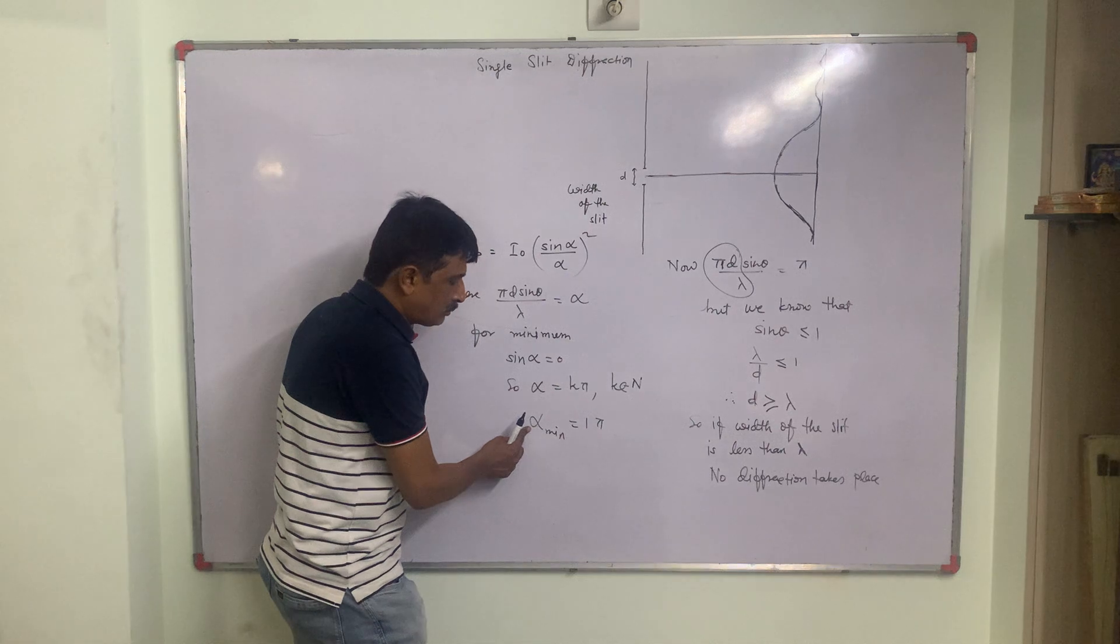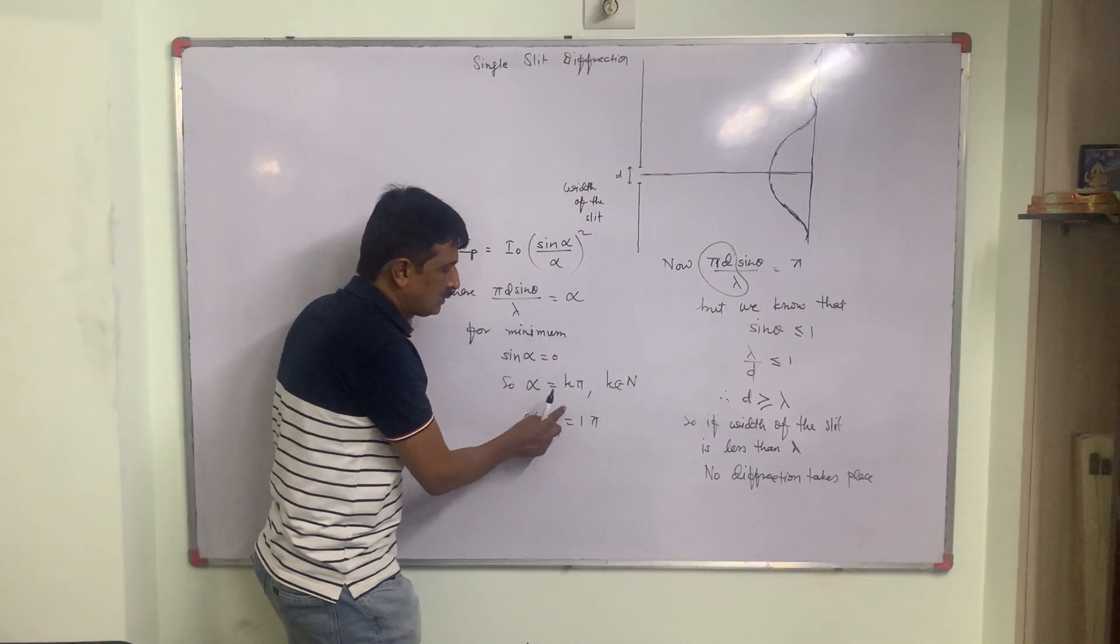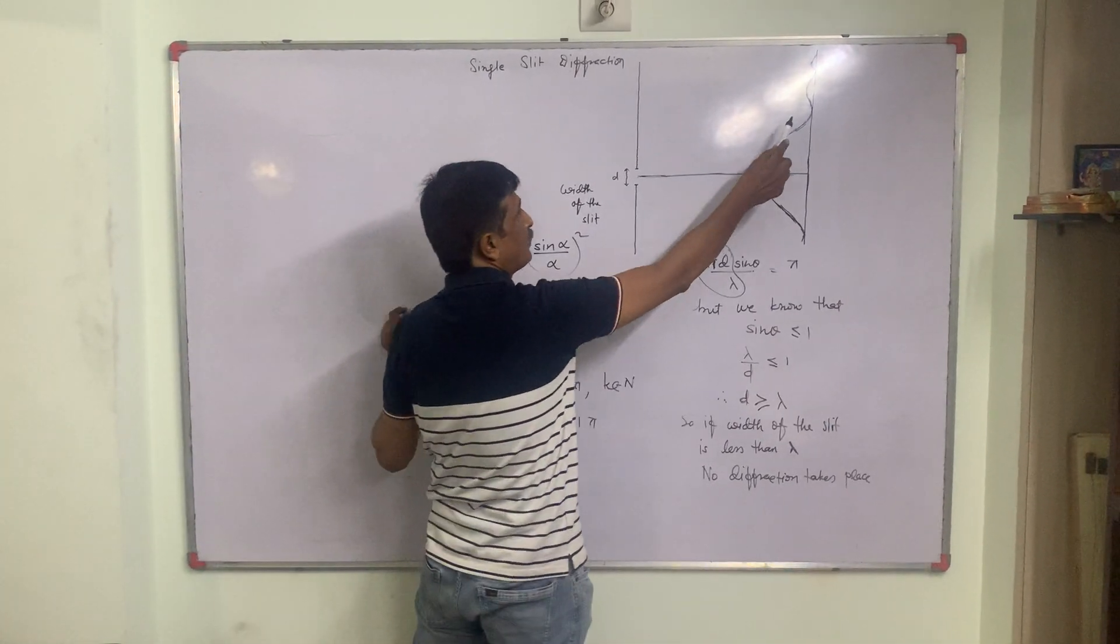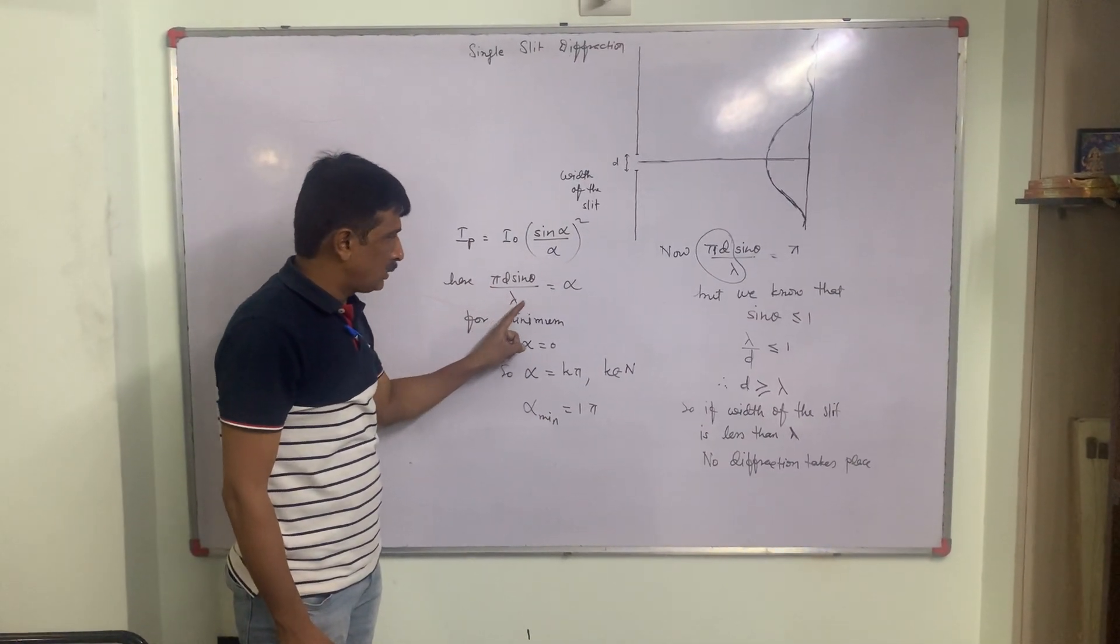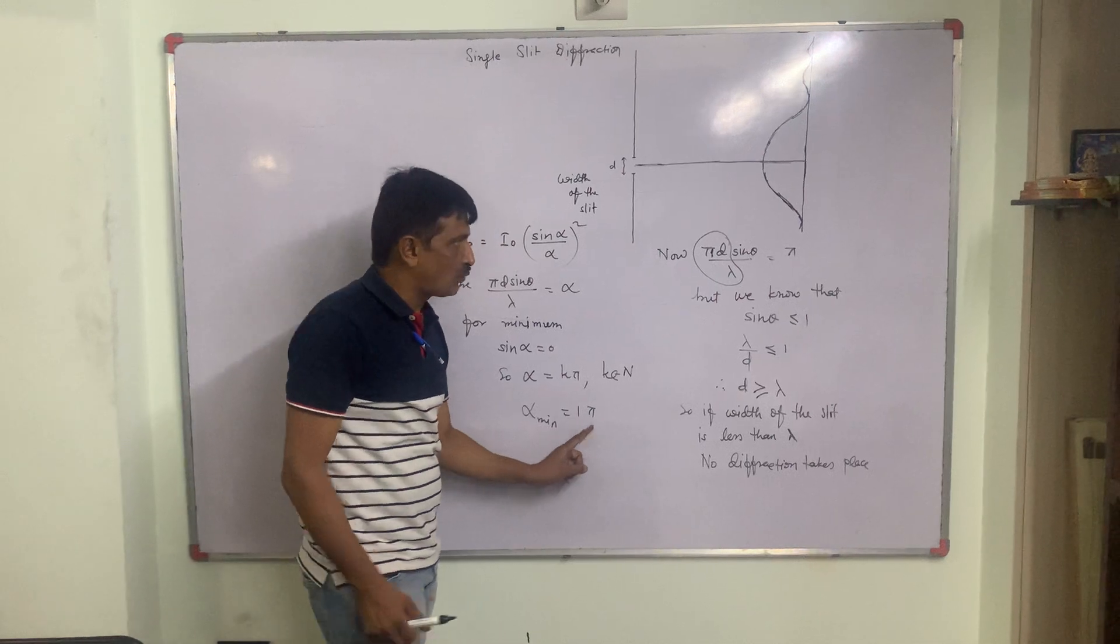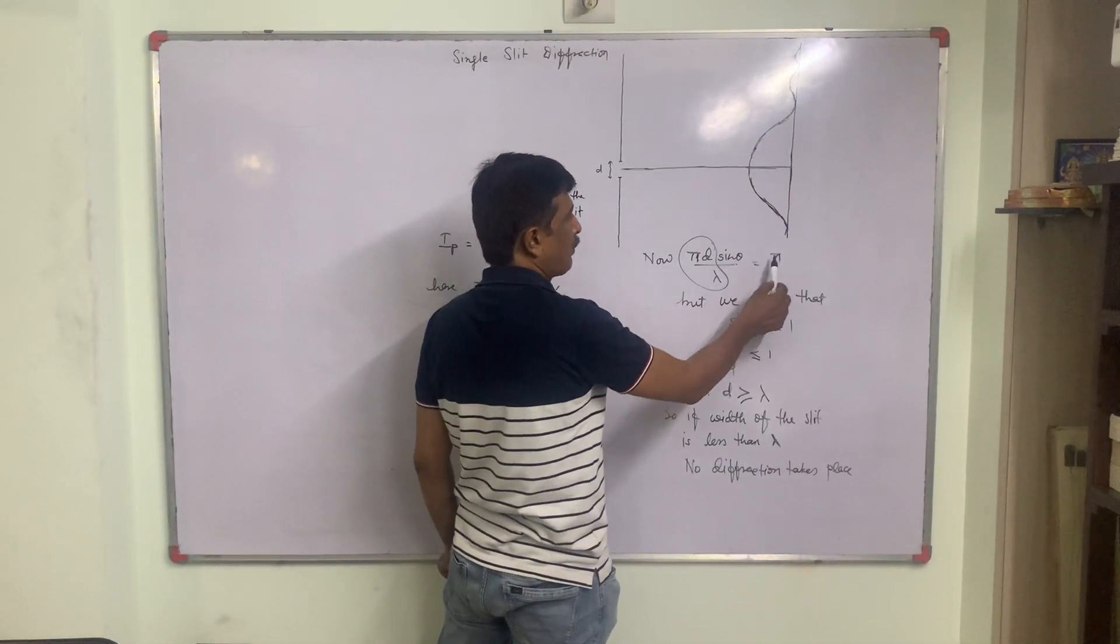If you consider alpha minimum, that is 1 pi, we are considering first minimum. So pi d sin theta by lambda is alpha. Alpha is 1 pi, so pi d sin theta by lambda is pi.